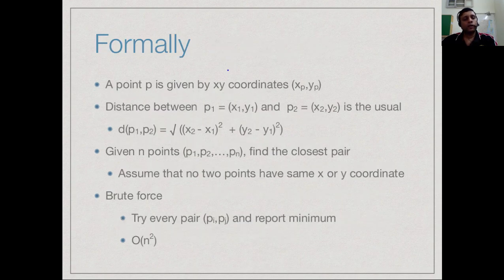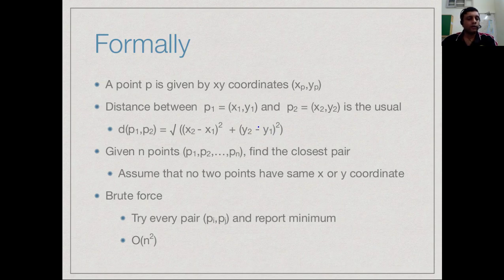Formally, we are looking at points in two dimensions. Each point is given by an (x, y) coordinate (xp, yp), and we are using the usual Euclidean notion of distance — that is, the distance given by Pythagoras's formula — which is that the distance between p1 and p2 is the square root of (x2 − x1)² + (y2 − y1)². We assume that this distance formula is available whenever we want to compute the distance between a pair of points.